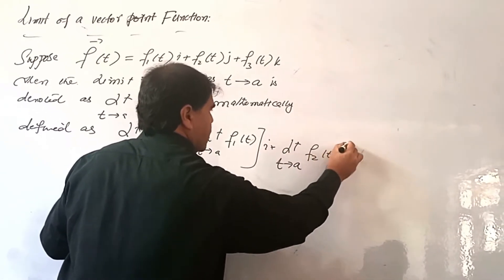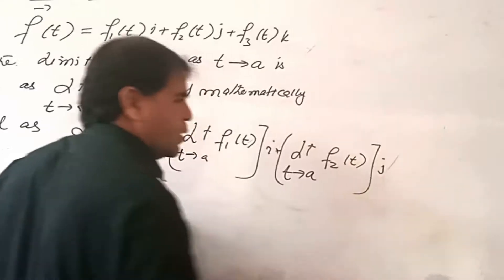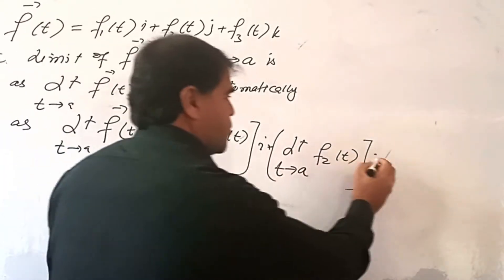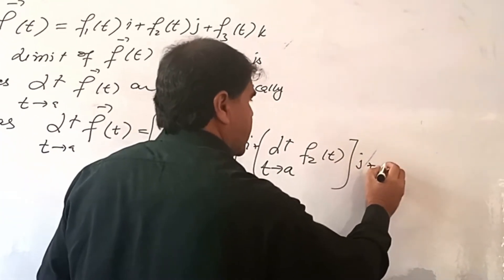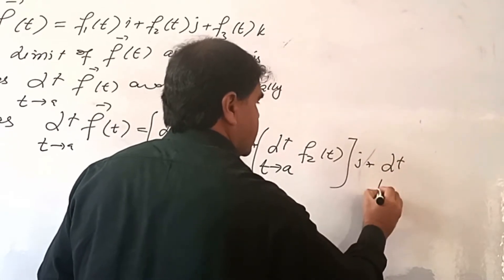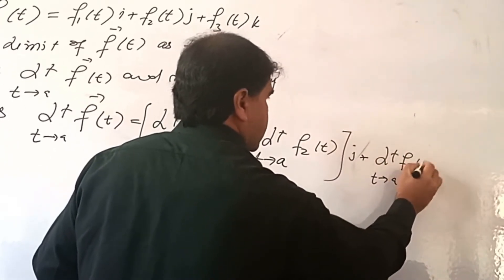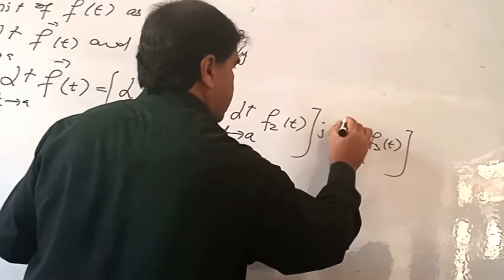Let us find the limit of the questions. We can also say limit t goes to a of f3(t)k component.